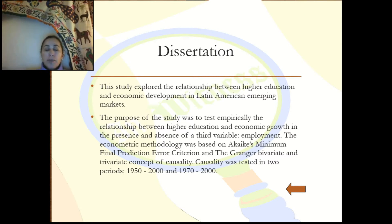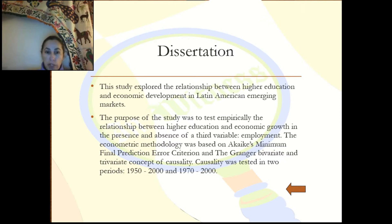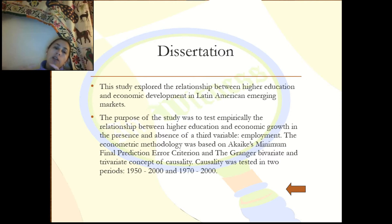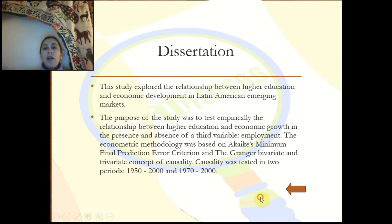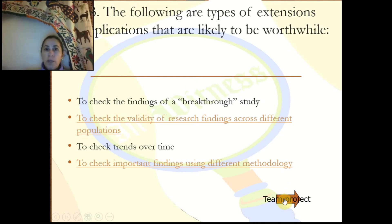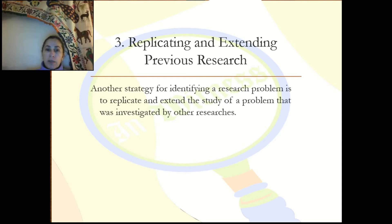It wasn't the same technique as the original article — I used a different technique with CAIC and Granger causality, but it was closely related. I tested two periods: 1950 to 2000 and 1970 to 2000, because there is a break in the political and economic history of those countries in the 50s and 70s. My dissertation was not only quantitative but also included a section on historical development, analyzing the political, economic, and employment situation during those periods.